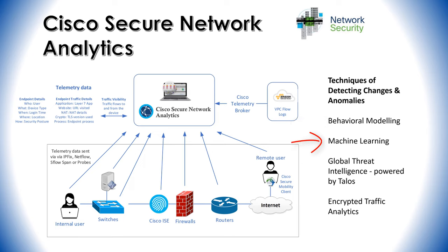Next is machine learning, which uses supervised and unsupervised techniques to detect threats. Then there's global threat intelligence, powered by Talos — Cisco's security intelligence research team — which has information about malware, malicious websites, dodgy domains, and all that sort of stuff out in the wild. Using Talos, you can instantly block things based on its recommendations. Finally, there's encrypted traffic analysis, which is able to detect malware without having to decrypt the actual traffic itself.